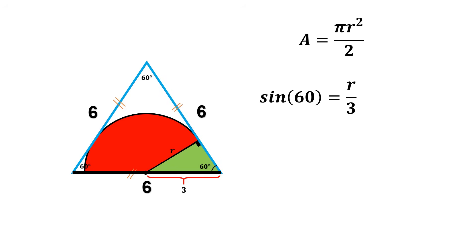So that means r equals 3 times sine 60 degrees. And since sine 60 degrees is equal to the square root of 3 over 2, we get r equals 3 times the square root of 3 over 2.